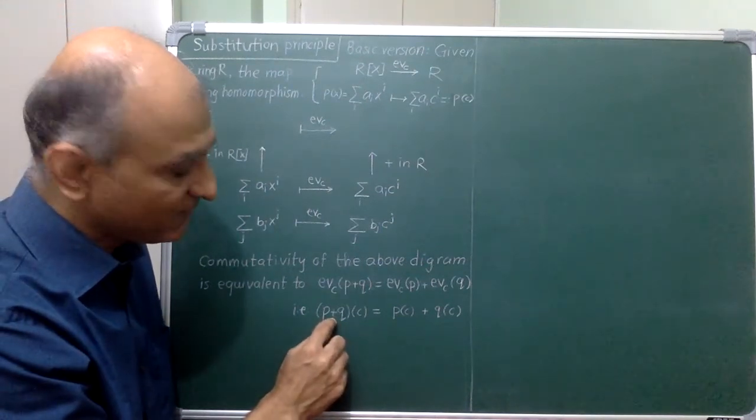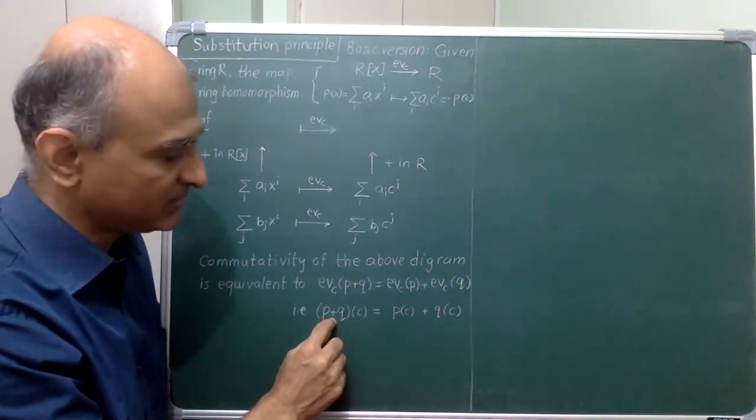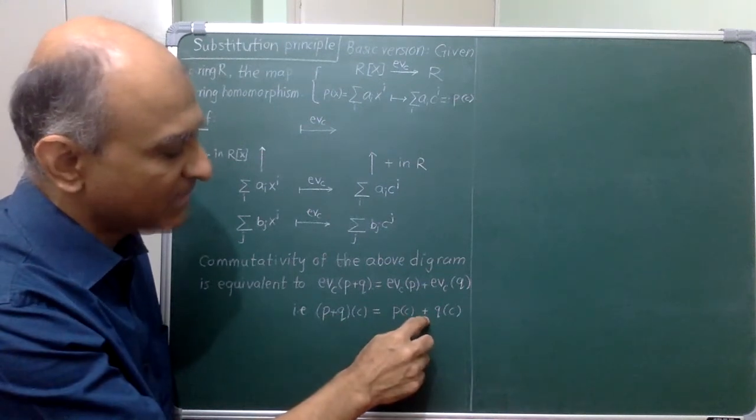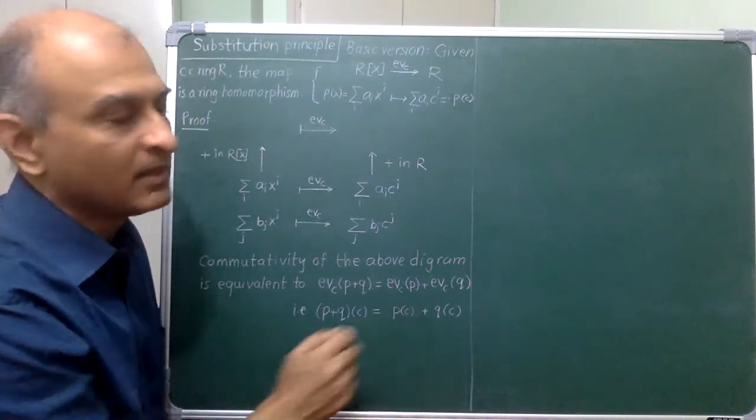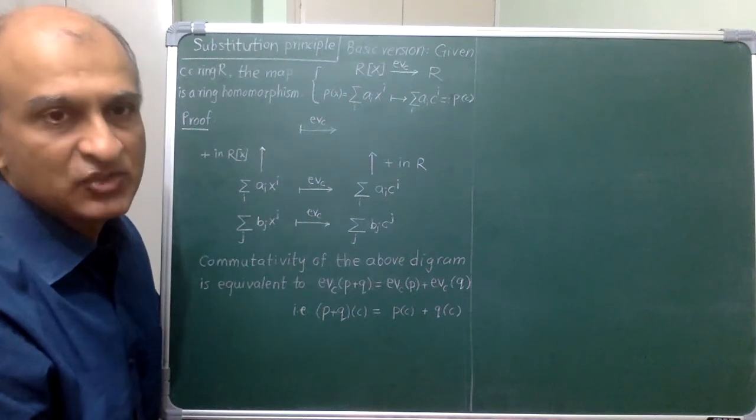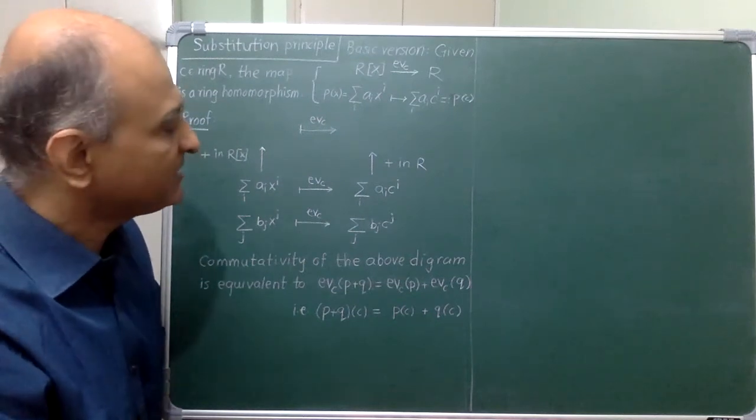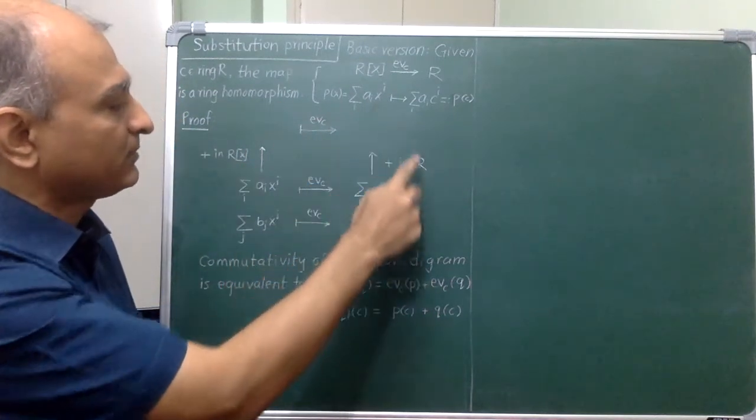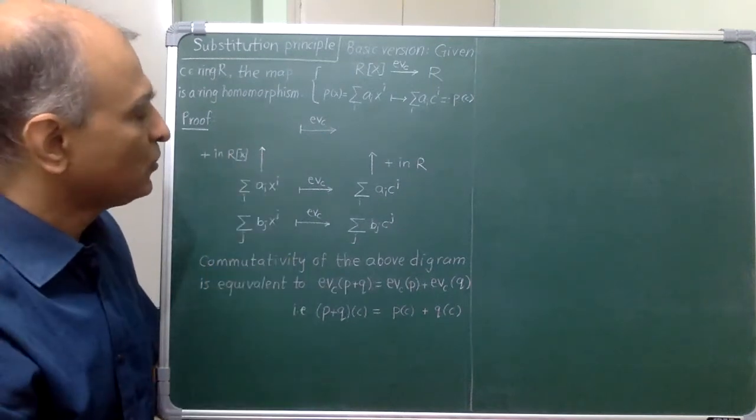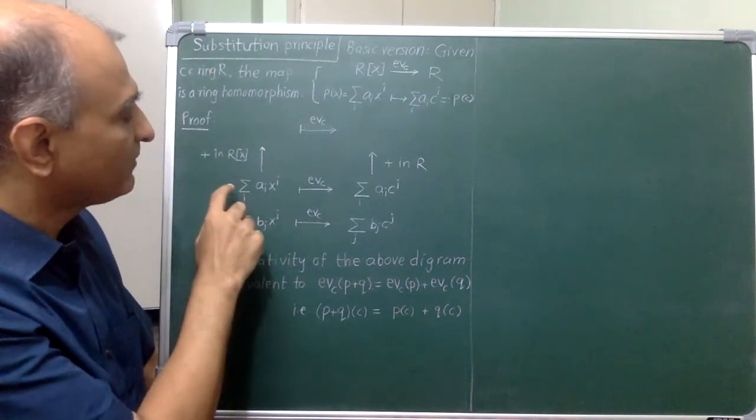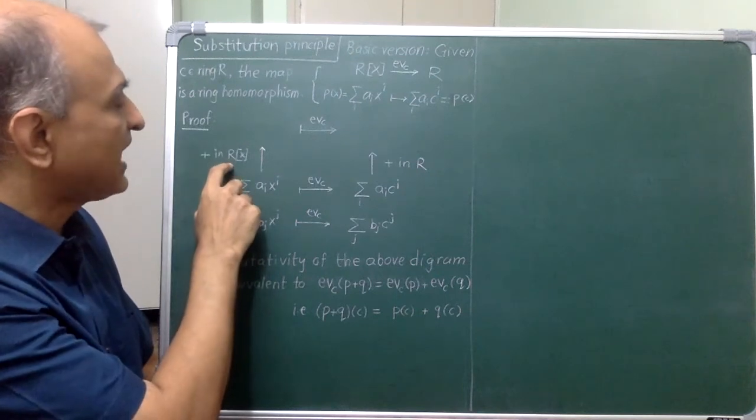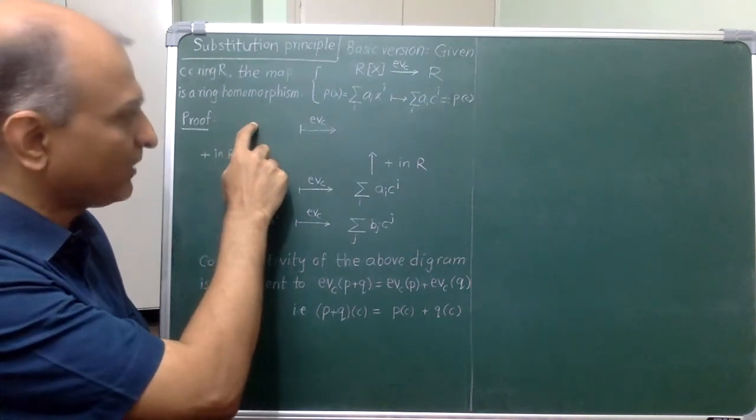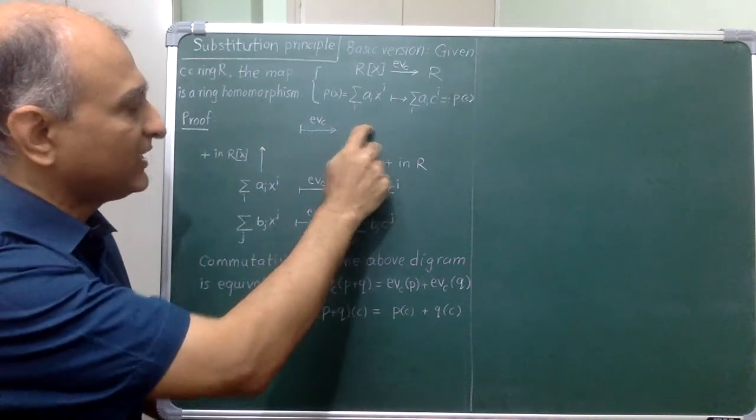On the left hand side, I have symbolic addition of polynomials and this addition is happening in the ground ring. The check is not difficult. I have expressed it here in terms of a picture. On the left hand side, I am given two polynomials that I am first adding in the polynomial ring to get a polynomial which I am then evaluating.